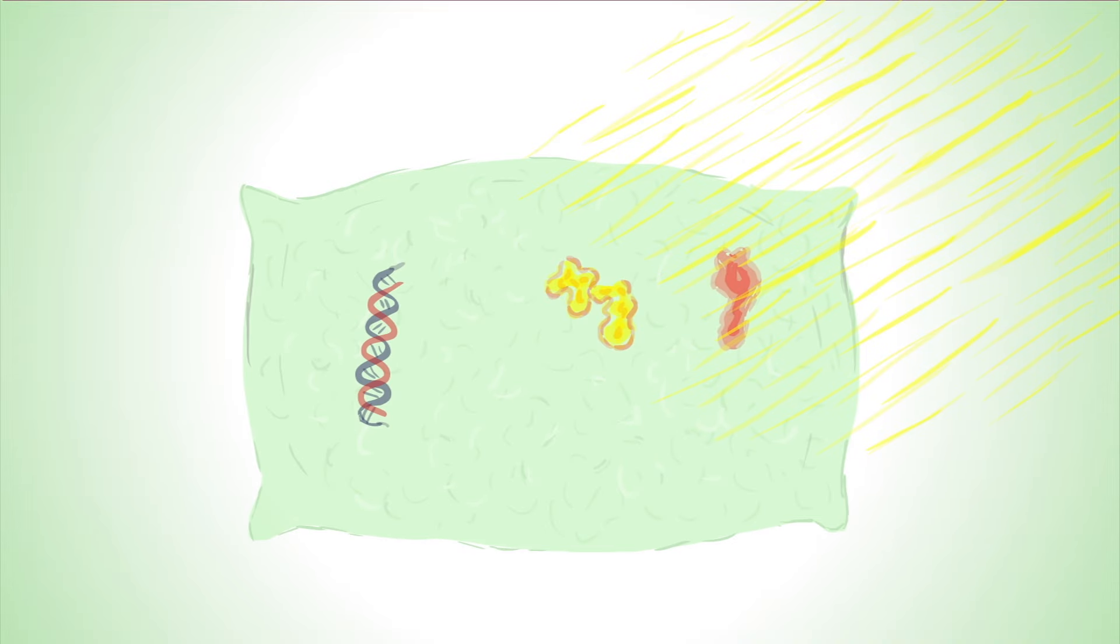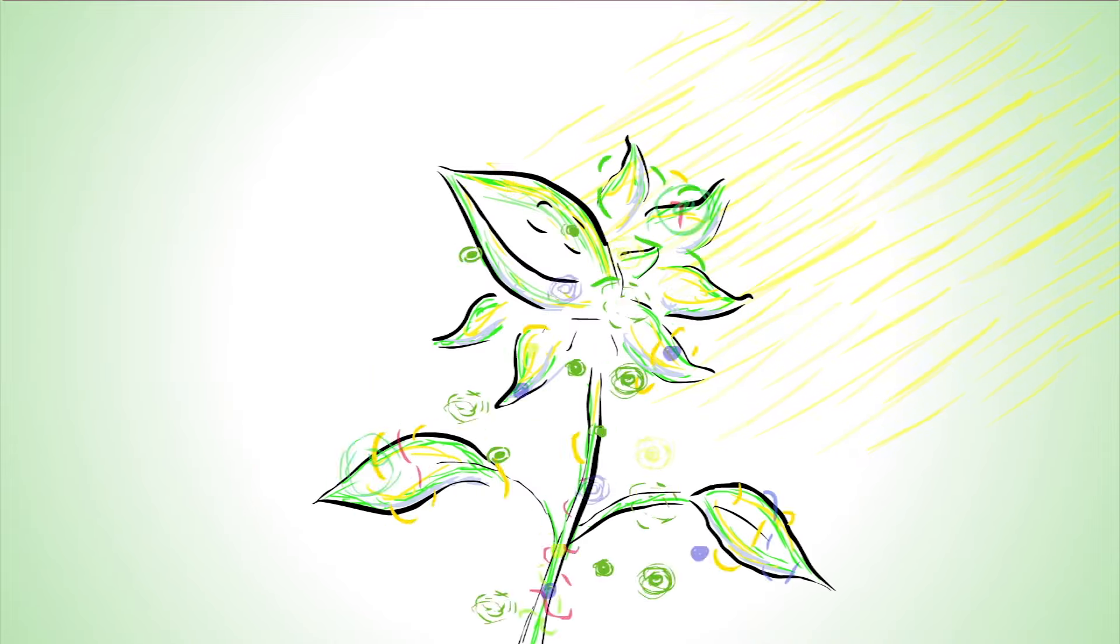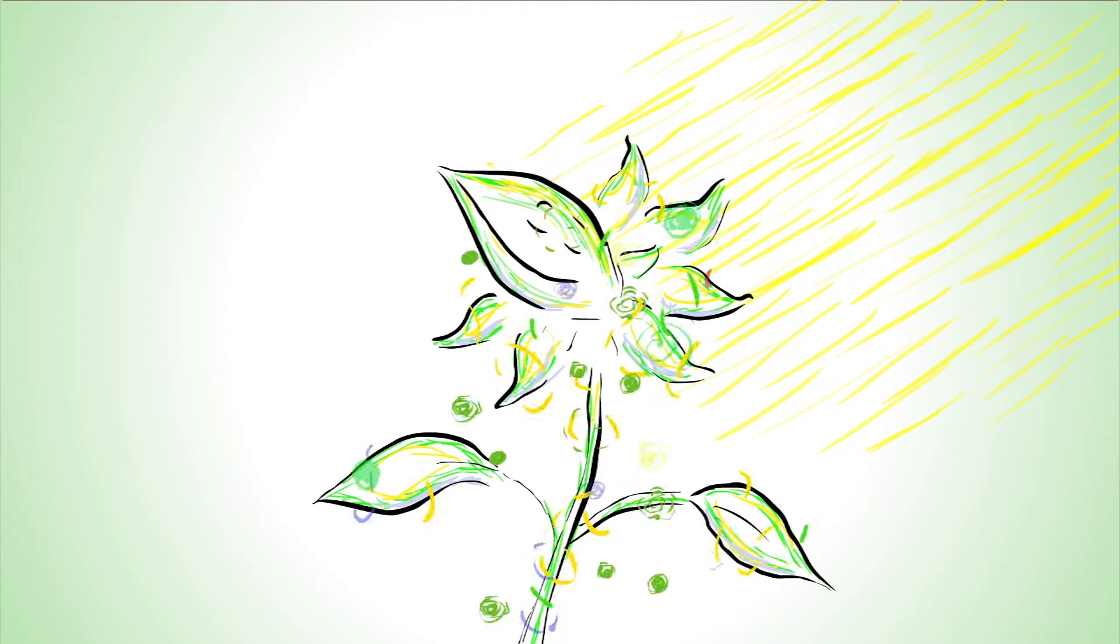When that happens, phytochromes initiate a chain of chemical reactions, passing the message down into the cellular nuclei. There, transcription factors trigger the manufacture of proteins required to carry out light-dependent processes, like photosynthesis.